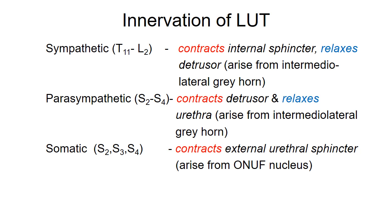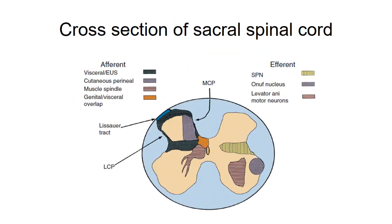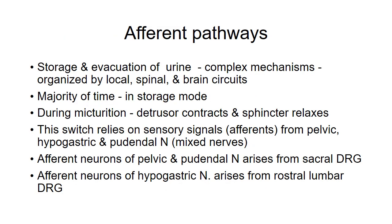These nerves contain both afferent and efferent axons, that is sensory and motor fibers. This picture shows the cross-sectional view of the spinal cord at the sacral level. Afferents are seen on the left side and efferents on the right side. We can see Onuf's nucleus on the lateral side of the ventral horn and the sacral parasympathetic nucleus.